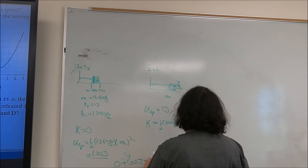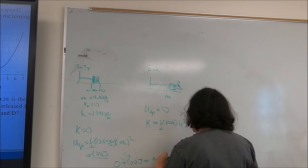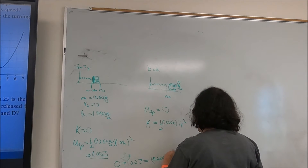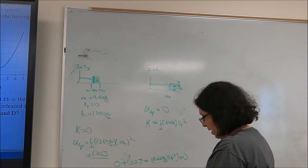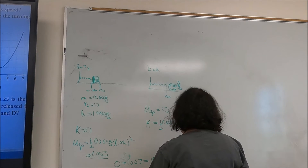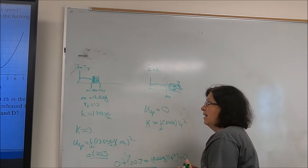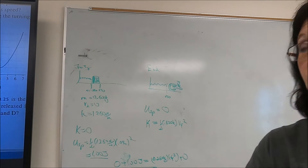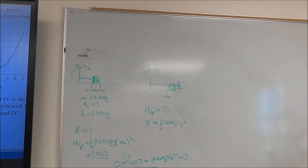One divided by 0.250 (which is half of 0.500), take the square root, and v_final equals 2 meters per second. That's the speed at which the book moves away from the spring. Since the surface is frictionless, its speed will remain 2 m/s.